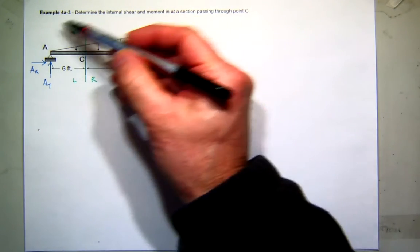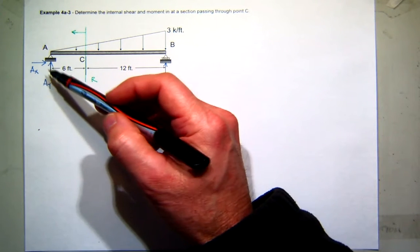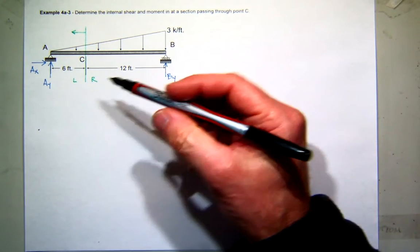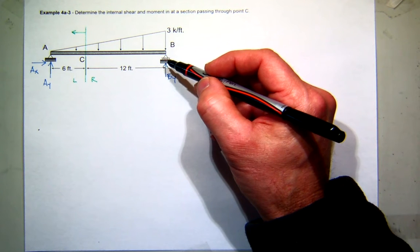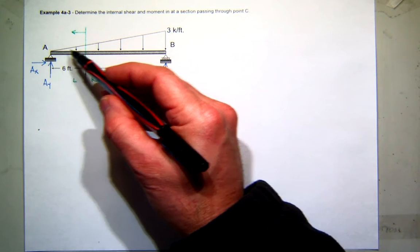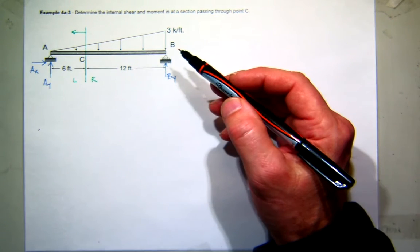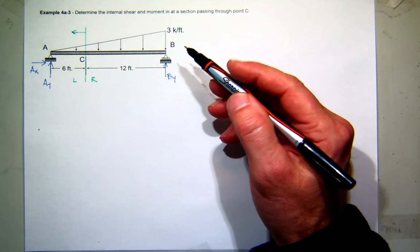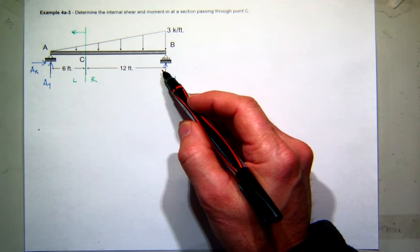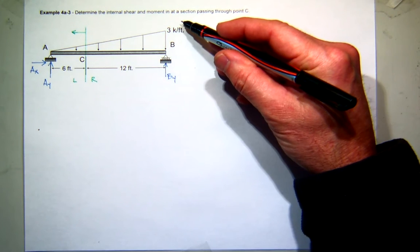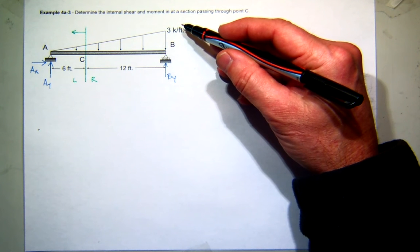So I'm going to draw a free body diagram for the whole structure and find my reactions at A. So I'll probably sum moments about B. Next thing I'm going to do is how am I going to handle this triangular load? Well, fortunately I know the area of a triangle.